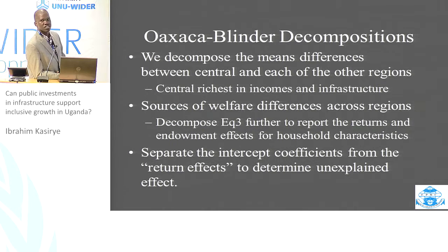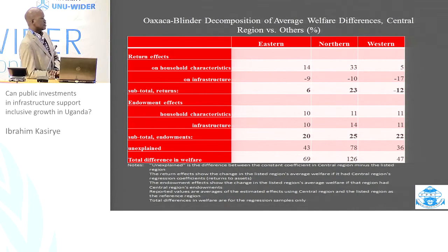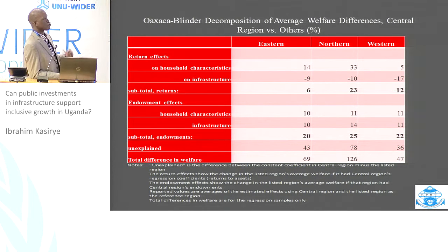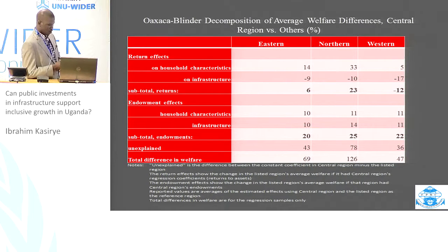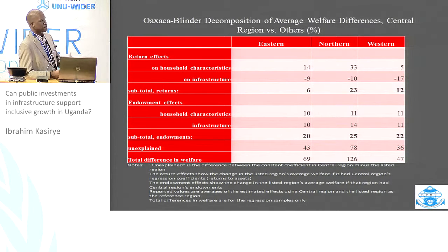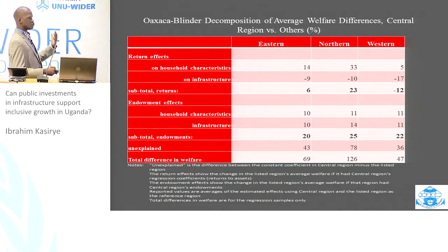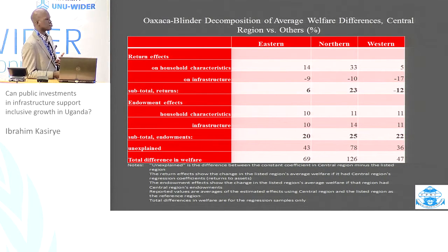We also try to see how much of the variation in welfare is explained by endowments and household characteristics, as well as what is unexplained. This chart compares the three poorer regions to the richest, that is central Uganda. The results show that if you were to give the kind of endowments in central Uganda to people in these other regions, it will only improve welfare by between 20% and 25%. Half of this is due to household characteristics like education attainment, and the other half is due to infrastructure. However, a lot of the variation in these places remains unexplained.